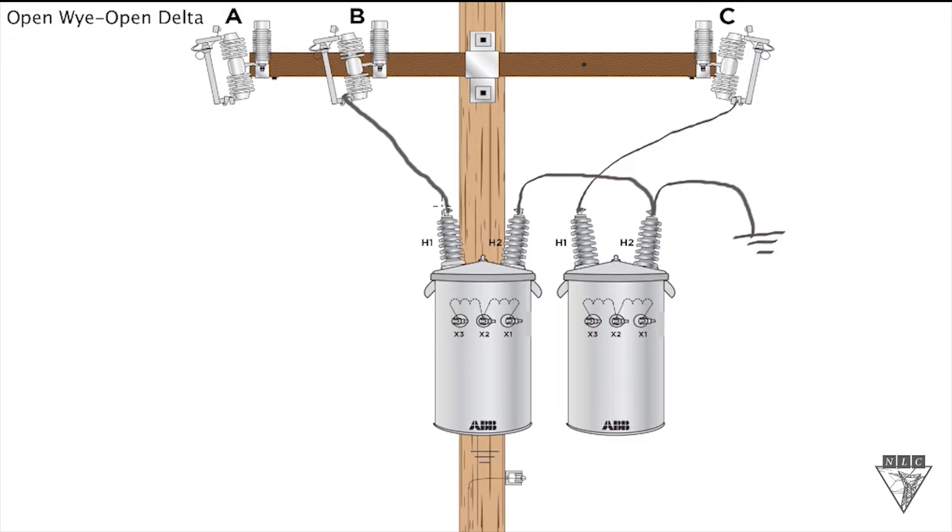You could just as easily go to A phase instead of B phase here. It doesn't matter, just depends on what they're looking for. So this is the primary Y connection. Your H2 bushings are tied together and then tied to ground, and then you utilize just two of the phases. We use C phase and B phase. That's our primary connection.